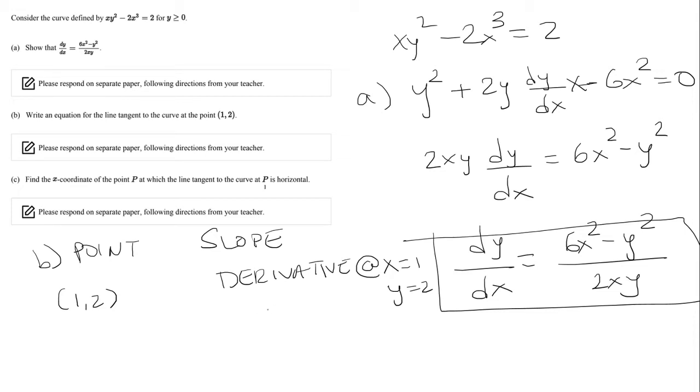So if I plug in x = 1, y = 2, I get (6×1² - 2²)/(2×1×2). So that will be 2/4, which is 1/2. So this is going to be my slope.